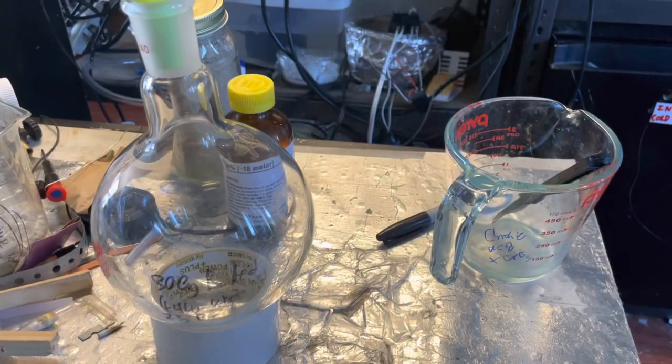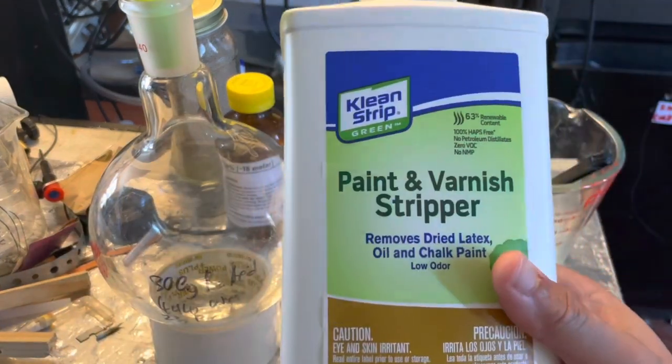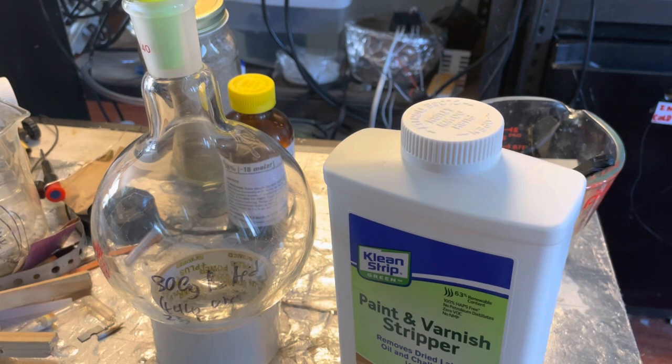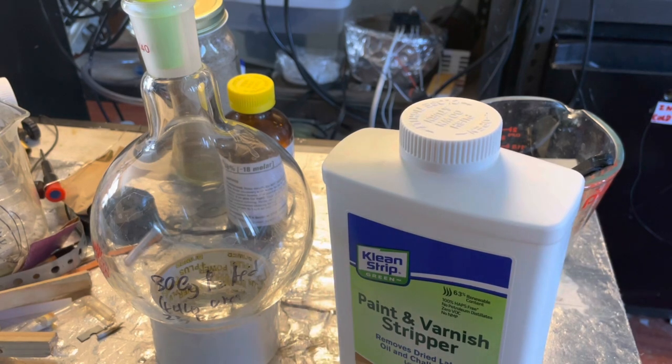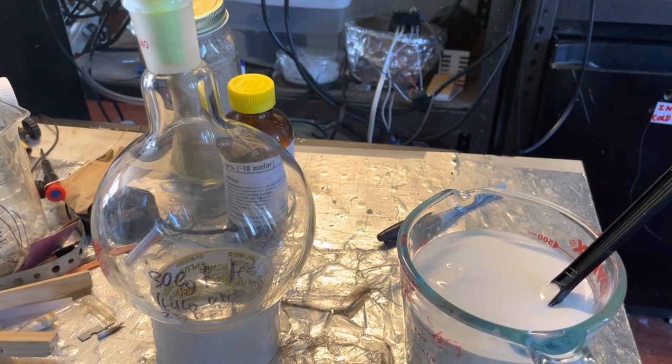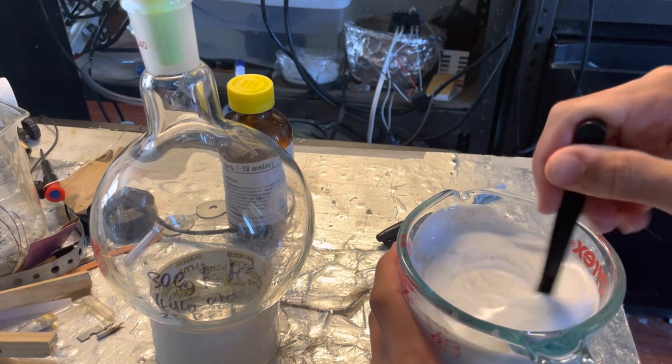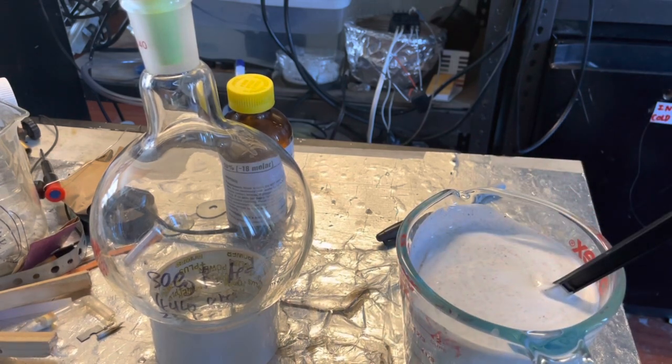Welcome back to another episode, and today we'll be extracting benzyl alcohol from this paint and varnish stripper. Now I found this at Lowe's, and I'm in California, so all the fun stuff is getting taken out of the hardware stores. But this one actually is benzyl alcohol apparently. Now I'm going to add some sand into it. It increases surface area in the flask, so it helps nucleate boiling points.